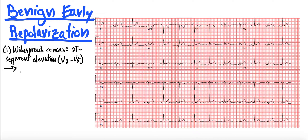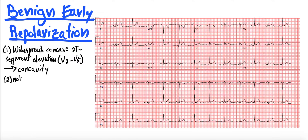A key here is concavity. These should be concave, upsloping of the ST segment rather than convex. You often get this notching or slurring of the J-point. Just remember the J-point — this is the termination of the QRS and the beginning of the ST segment.